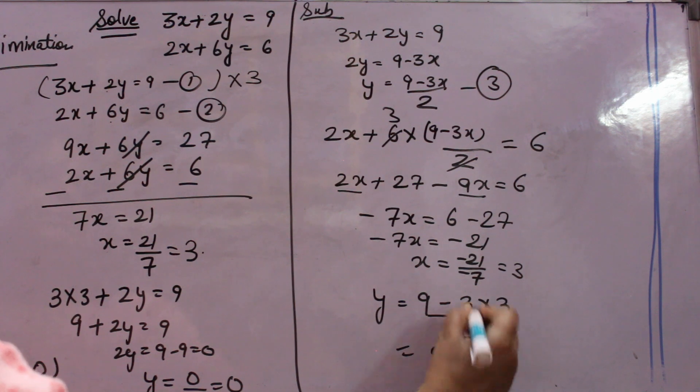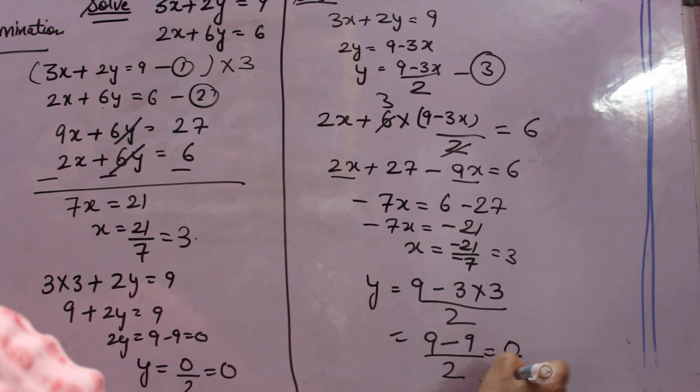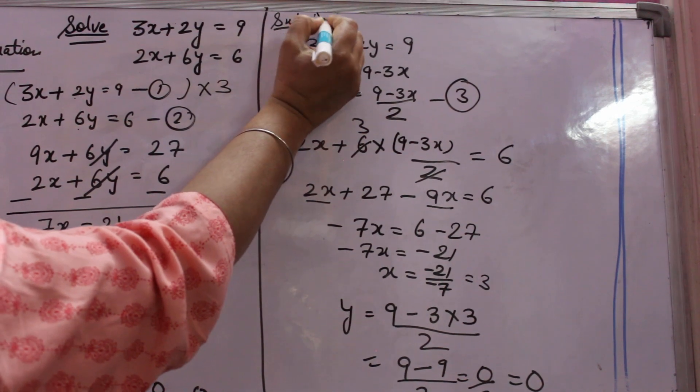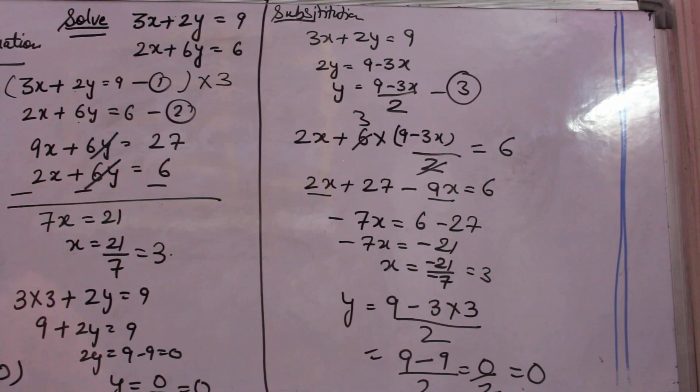BODMAS rule, firstly you will multiply. 3 into 3 is 9. 9 minus 9 over 2. That is 0 over 2. That is 0. So this is solution by substitution method. And this is the solution by elimination method.